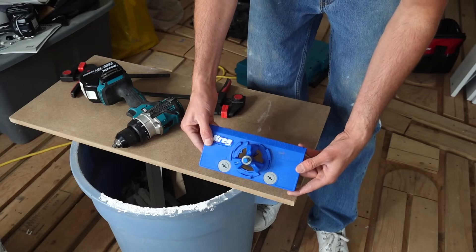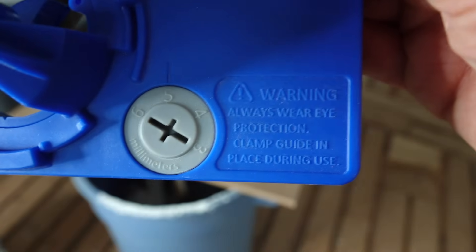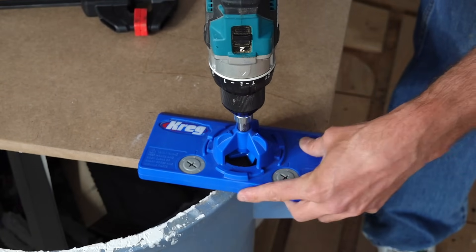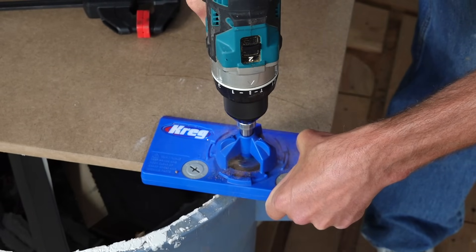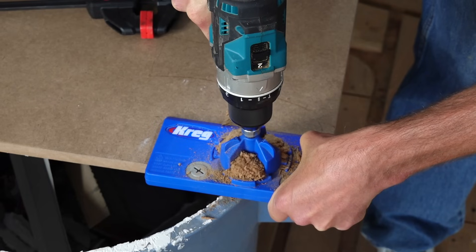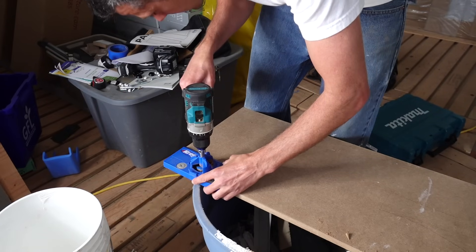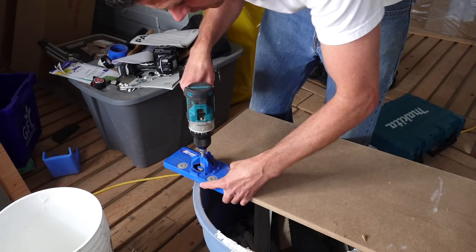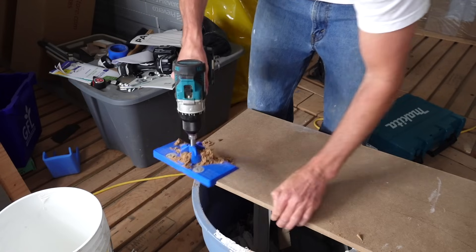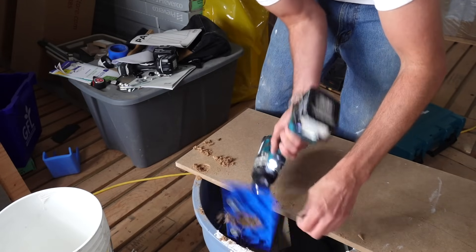Next I'm going to be using the concealed hinge jig, the Kreg one, this thing's great. I have it set at five right there. I'm going to set it at three inches away from the edge, just using the little guide right here. This thing is the best. Three inches, last time I clamped it on here. I would say for safety and accuracy, definitely a good idea to clamp it, but YOLO.